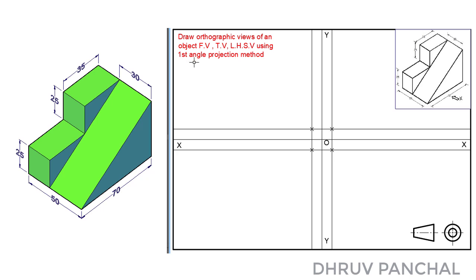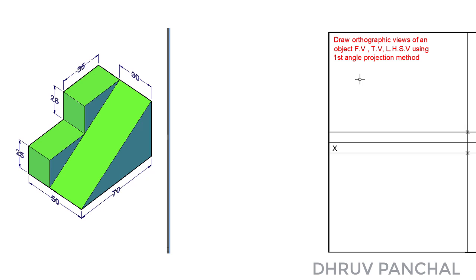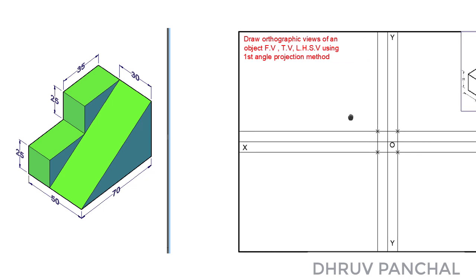As per the given data, we have to draw a front view, top view, and left hand side view using first angle projection method. As we know, in the case of first angle projection method, we have to draw the front view in the first quadrant, the top view below the front view, and the left hand side view to the right side of the front view. So we will consider this is our first quadrant, this is second quadrant, this is third quadrant, and this is fourth quadrant. We will draw the front view accordingly, so there will be space for the top view as well as the left hand side view.